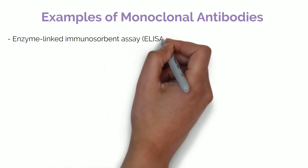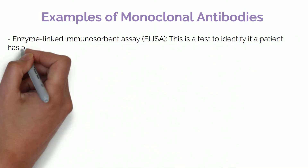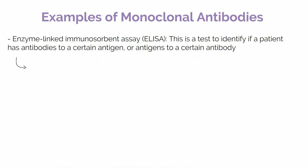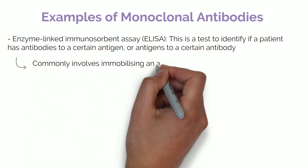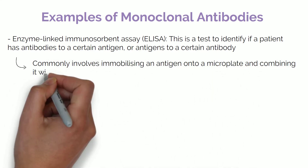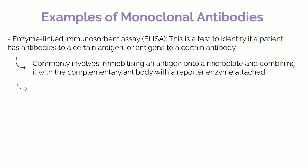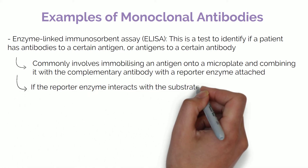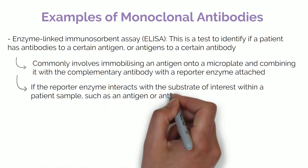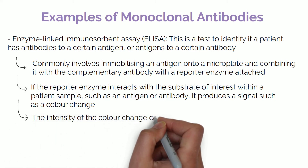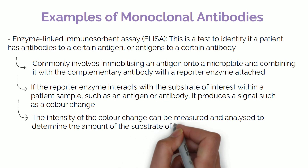Examples of monoclonal antibody use in diagnostics include the enzyme-linked immunosorbent assay, or ELISA. This is a test to identify if a patient has antibodies to a certain antigen, or antigens to a certain antibody. An ELISA test commonly involves immobilizing an antigen onto a microplate and combining it with the complementary antibody with a reporter enzyme attached. If the reporter enzyme interacts with the substrate of interest within a patient sample, such as an antigen or antibody, it produces a signal such as a colour change. The intensity of the colour change can be measured and analysed to determine the amount of substrate of interest in the sample.